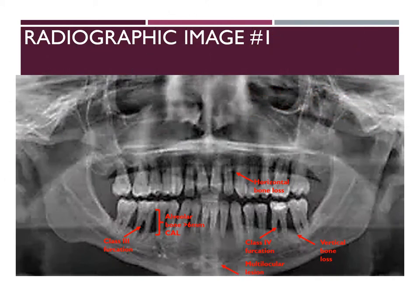In this radiographic image, you can clearly see horizontal bone loss on the anterior maxillary and mandibular arch. The vertical bone loss is present in the maxillary and mandibular arch as well; however, it is more localized to the posteriors. You can clearly see a class 4 furcation which will be clinically visible in another image. You can also see a class 3 furcation on tooth number 30. On the same tooth, you can also see a 6 mm clinical attachment loss.